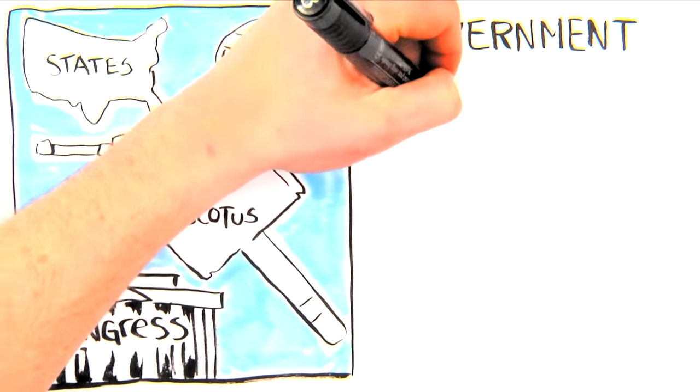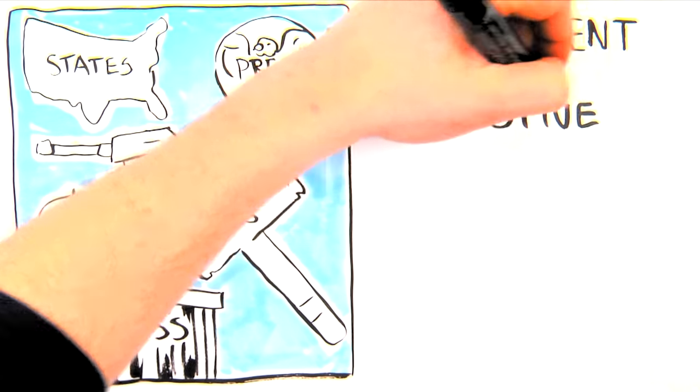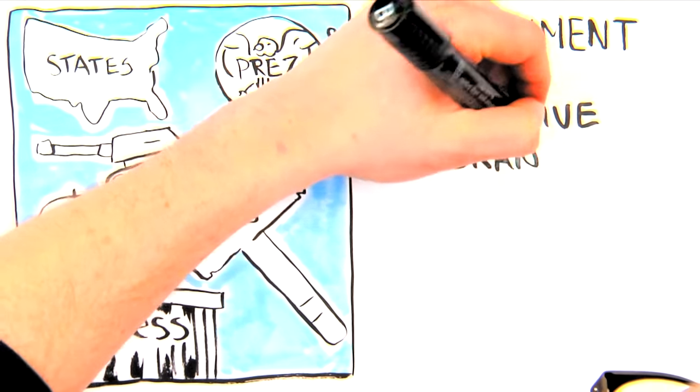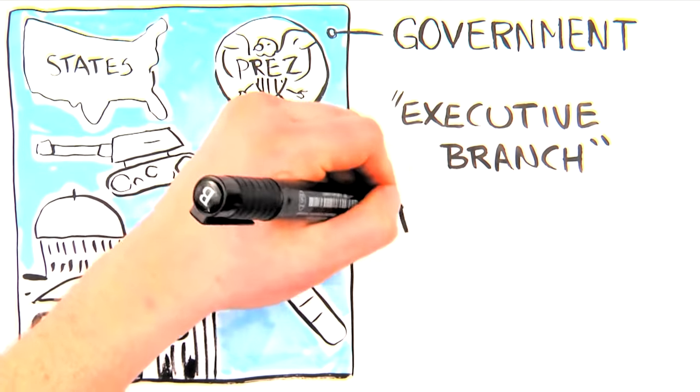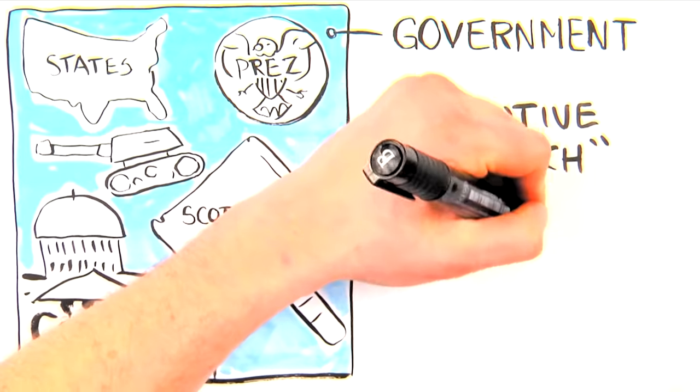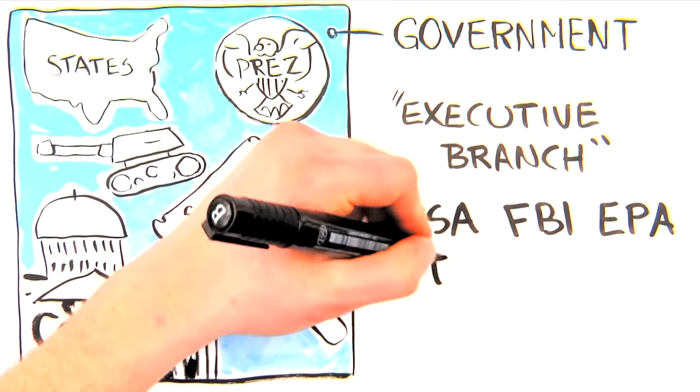Imagine that one of those things, either Congress or the President, decides to do something, like building roads. Well, they're not going to pick up shovels in the concrete themselves. They're also not going to hire and oversee the workers themselves. Instead, they'll create an agency to carry out their goal.